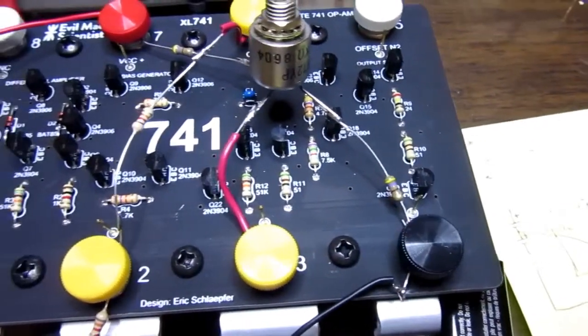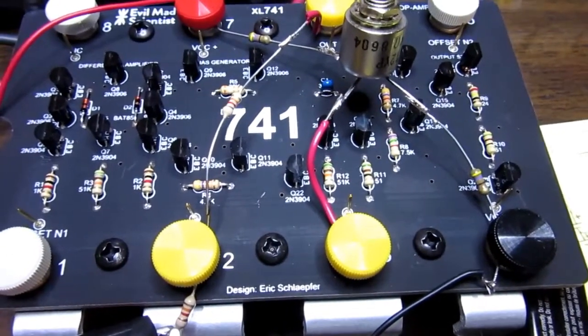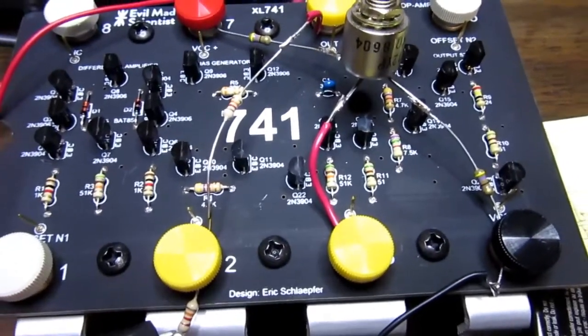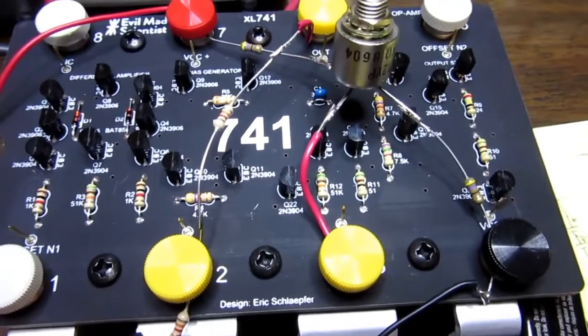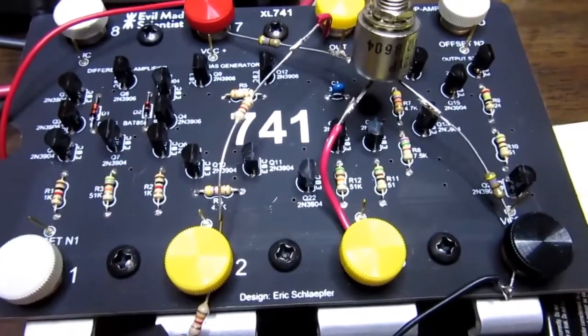And the gain formula for this configuration is feedback resistor over the resistor to ground, or vice versa, it's just the ratio. And so because they're the same value, that equals 1. And then that ratio plus 1, so the gain is 2.